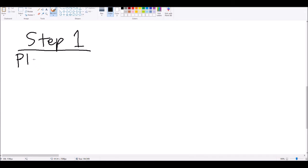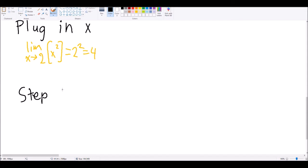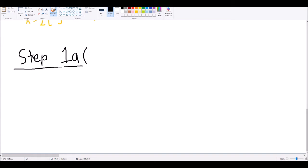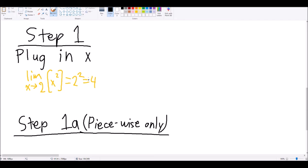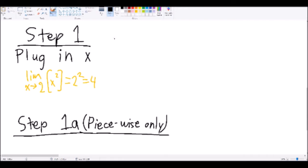Step 1, just plug in the value. Seriously, sometimes limits can be just that easy. Now, if you have a piecewise function, and the value you're approaching is the intersection of multiple pieces, you're going to need to take step 1a instead.